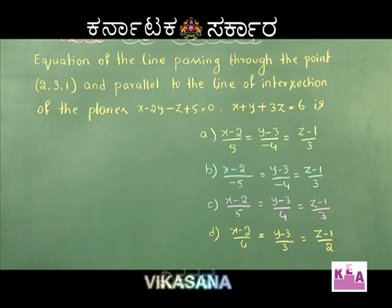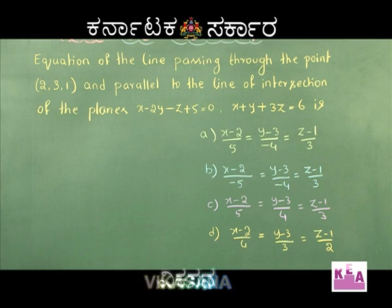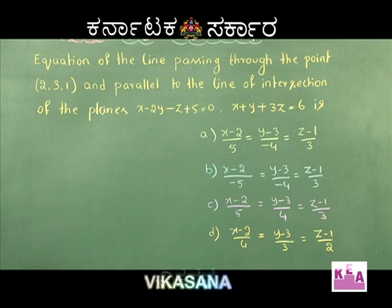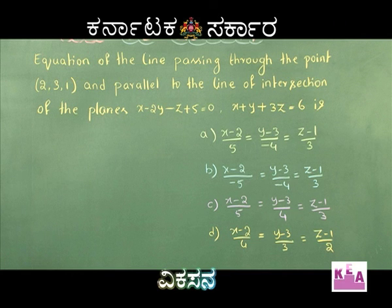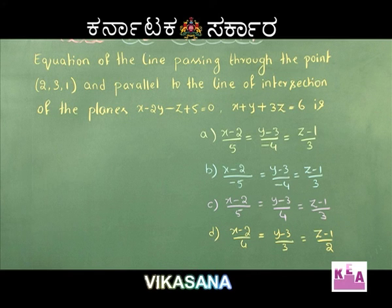First option: (x−2)/5 = (y−3)/(−4) = (z−1)/3. Next option: (x−2)/(−5) = (y−3)/(−4) = (z−1)/3. Next option: (x−2)/5 = (y−3)/4 = (z−1)/3. Last option: (x−2)/4 = (y−3)/3 = (z−1)/2.